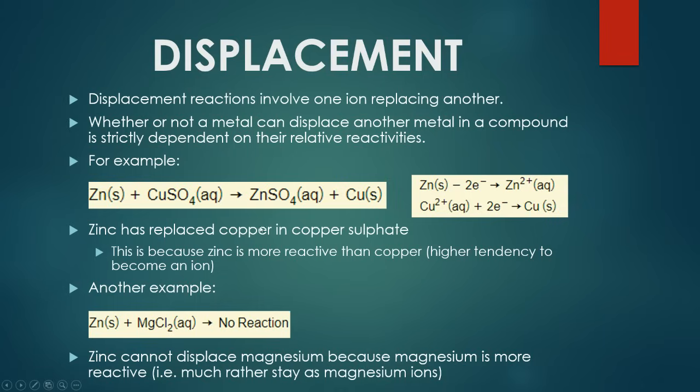Talking about the reactivity series, another really important concept to learn is displacement reactions, which basically involve one ion replacing another in the reaction. Whether or not a metal can displace another metal that exists in a compound is strictly dependent on their relative reactivity. For example, if you add zinc to copper sulfate, what you'll find is that you actually get an end result of zinc sulfate with copper. Let's look carefully at what's actually happened.